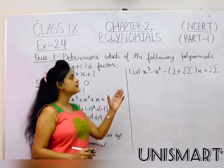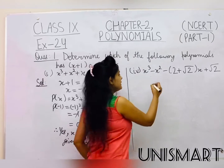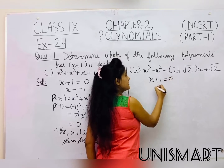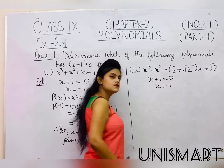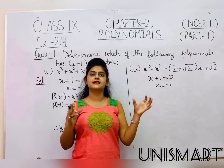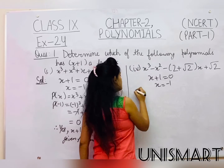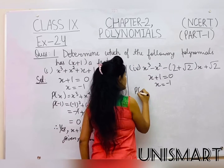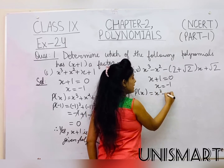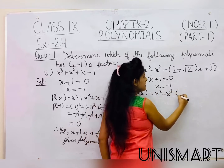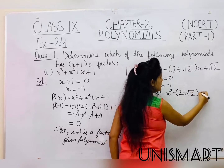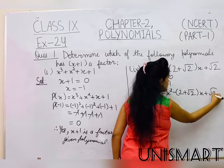For the next polynomial, again x+1 equals 0 gives x equals minus 1. We will put this value into the polynomial. The polynomial here is: minus x² minus (2+√2)x plus √2.